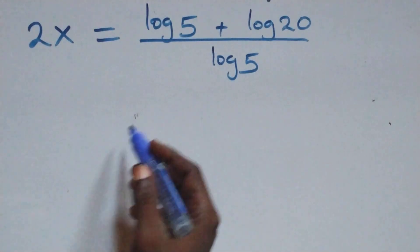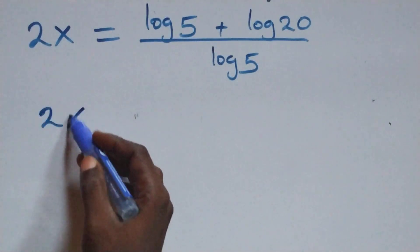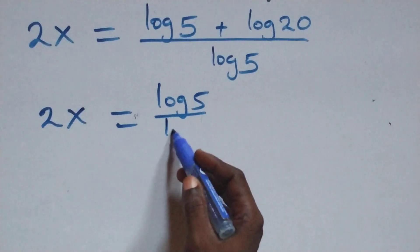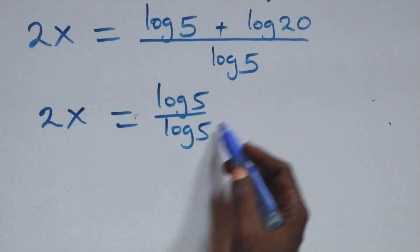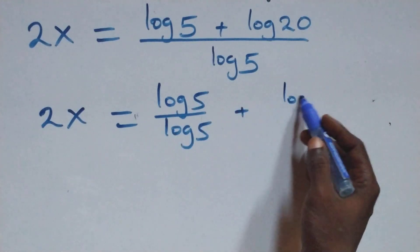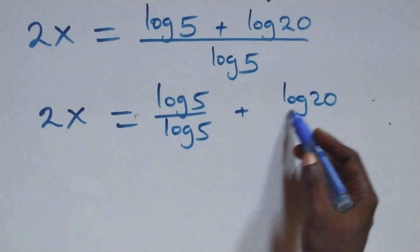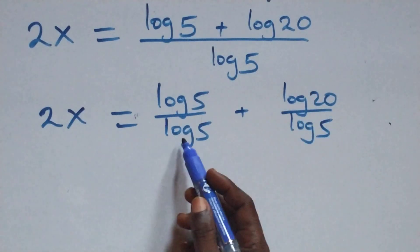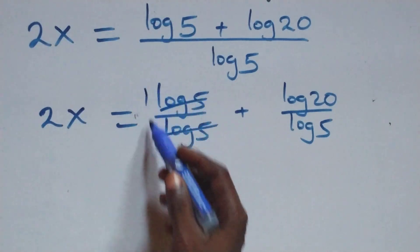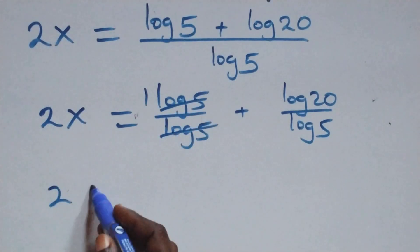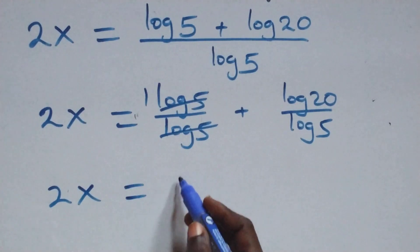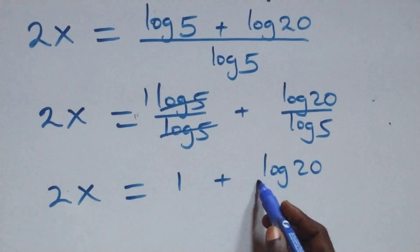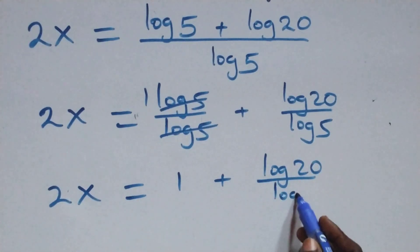We separate this into two fractions and we have 2x equals log 5 over log 5 plus log 20 over log 5. Log 5 over log 5 cancels to give 1, which implies 2x equals 1 plus log 20 over log 5.